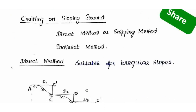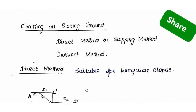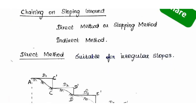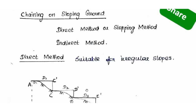Chaining on sloping ground uses two methods. The first is the direct method, also called the stepping method. The second is the indirect method. In the direct method, we measure horizontal distance directly in the field. In the indirect method, we measure sloping distance in the field and then calculate the horizontal equivalent value.